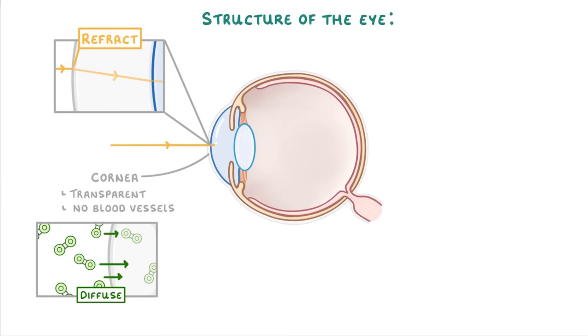The next important structure is the iris, which is the colored bit of your eye and controls how big or small the pupil is.